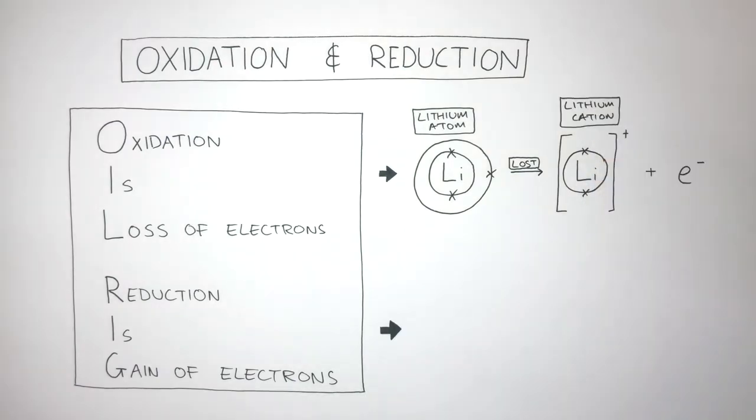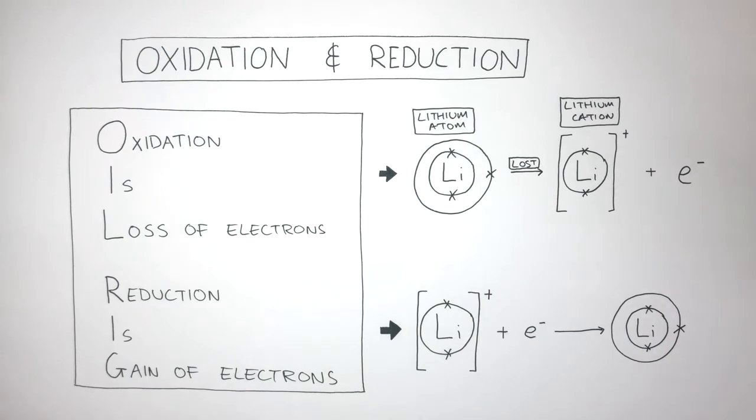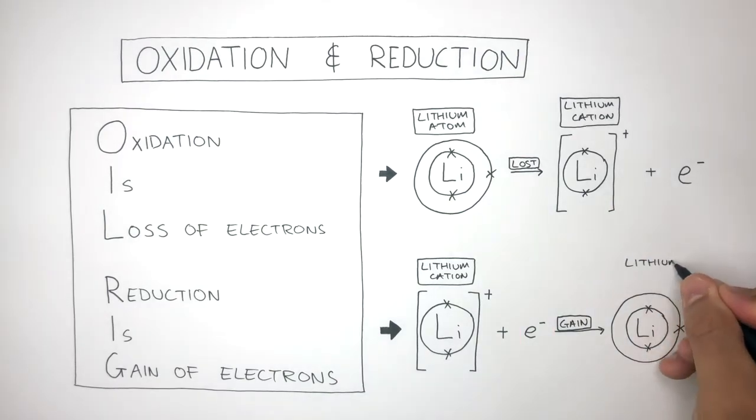Whereas reduction is the gain of electrons. So if this lithium cation gained one electron to become a lithium atom again, this is an example of reduction. In this example, the lithium cation has been reduced because it has gained one electron to become a lithium atom.